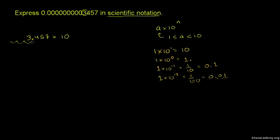So how many times are we going to have to move it over to the left to get this number? Let's think about how many zeros we have. We have to move it once just to get in front of the 3, and then we have to move it that many more times to get all the zeros. If we started here, we're going to move 1, 2, 3, 4, 5, 6, 7, 8, 9, 10 times. So this is going to be 3.457 times 10 to the negative 10 power.